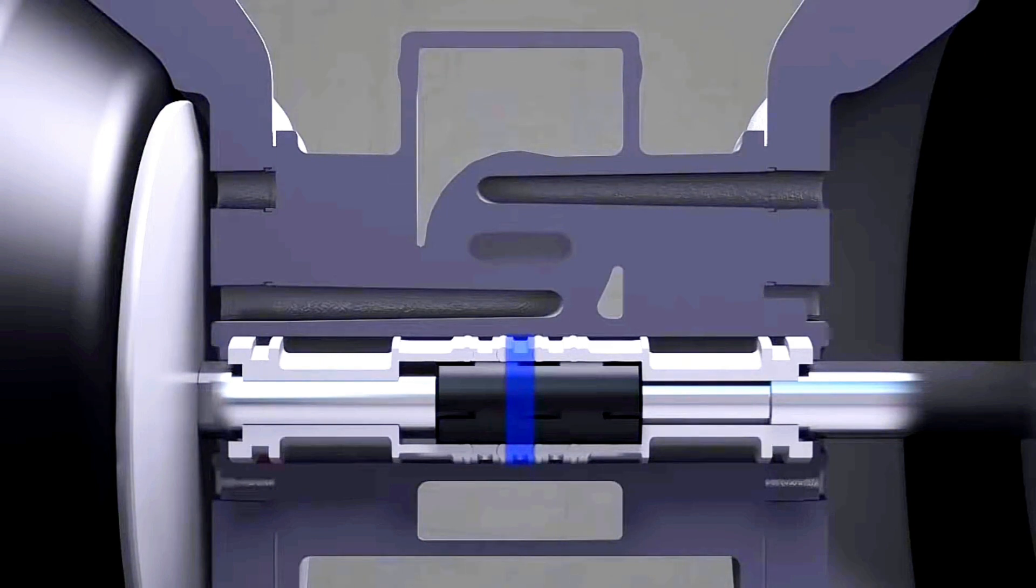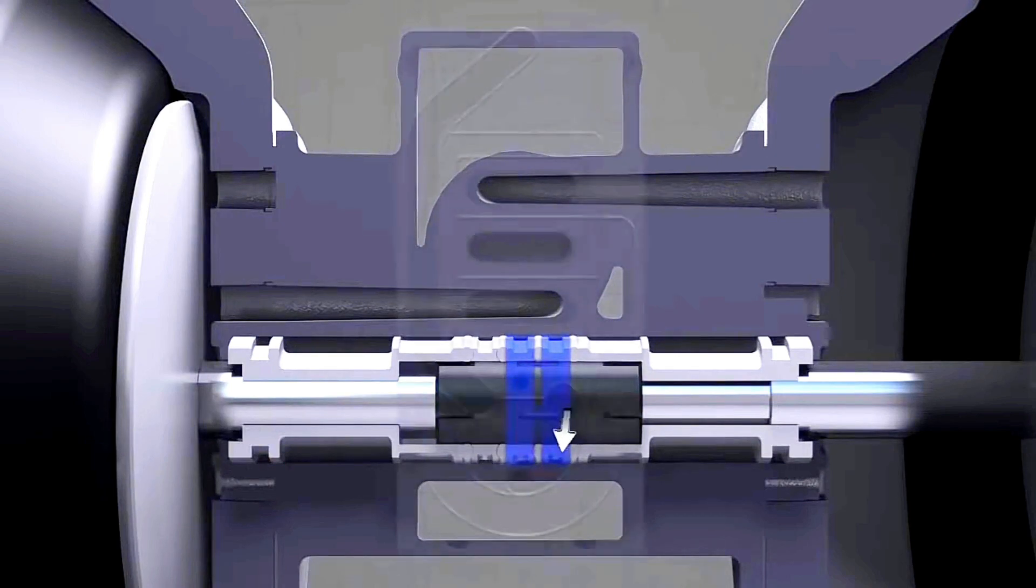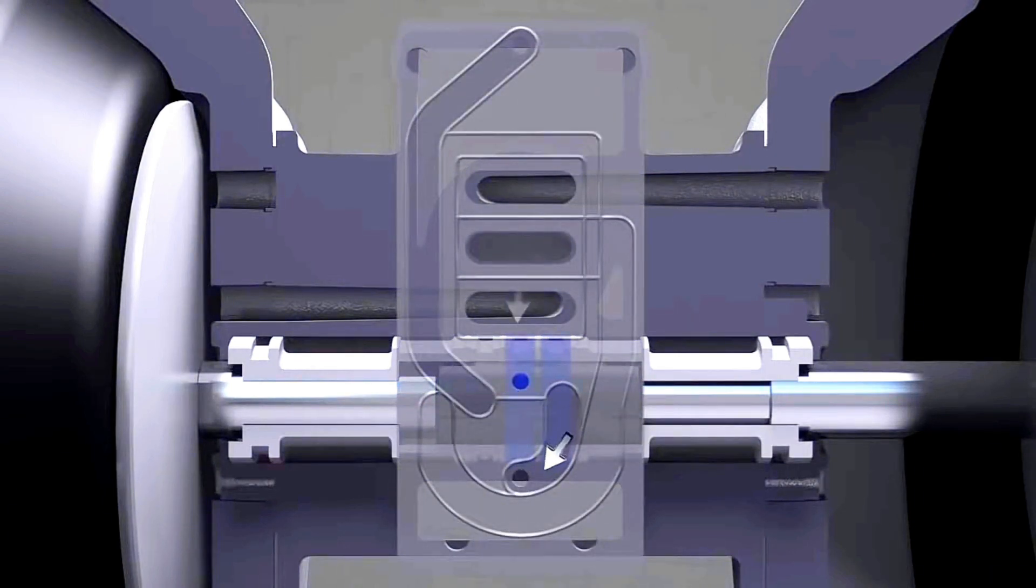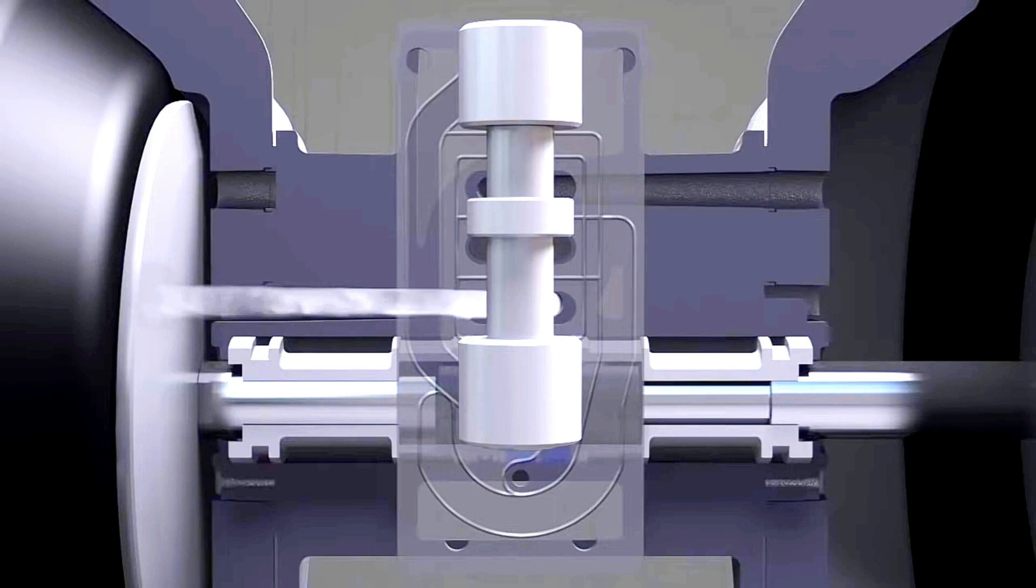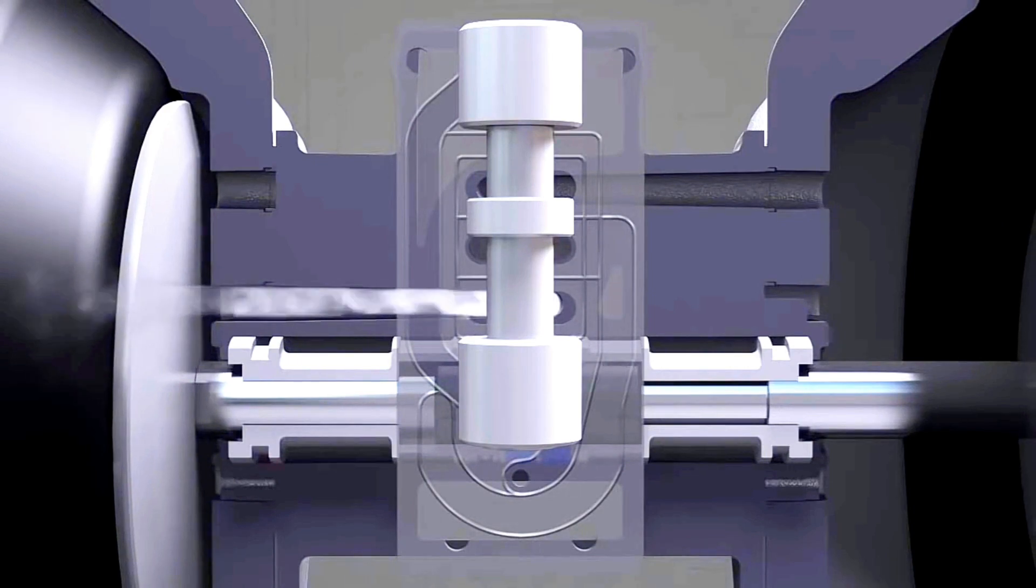When the pilot air valve travels far enough to the right, chambers three and four are connected. This allows the pressurized air from chamber three to pass through and exit chamber four, which moves the main air valve upward. This causes the left diaphragm to pressurize and the pilot valve to begin moving left.